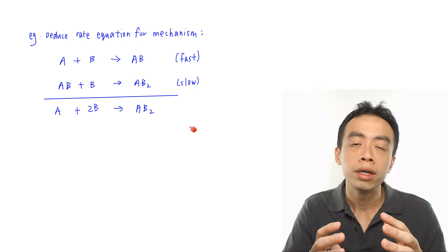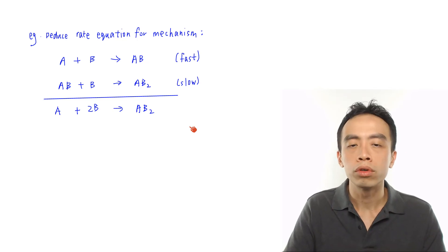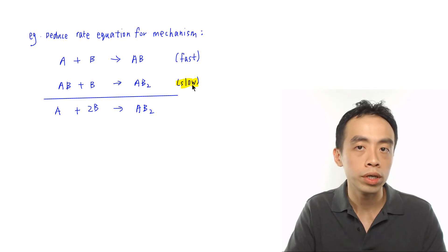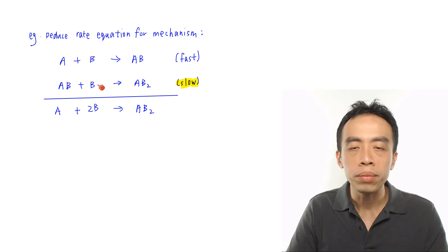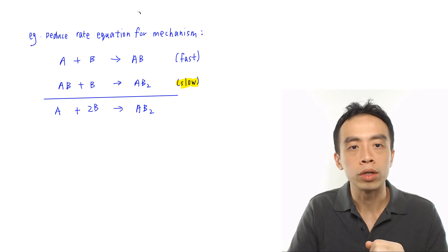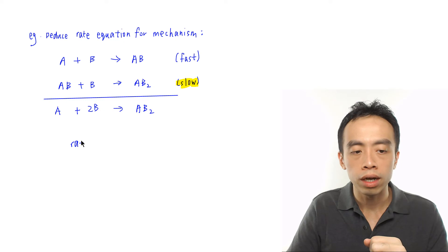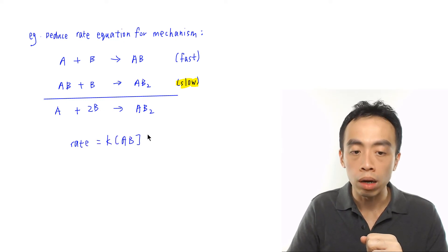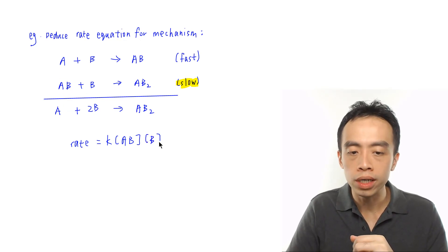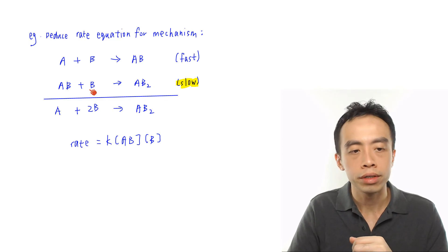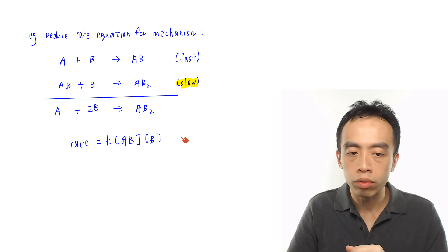When we want to determine the rate equation, we focus only on the slow step. Based on this slow step, I have one AB involved — first order with respect to AB — and one B involved — first order with respect to B. So I can first write out the rate equation as: rate equals k times concentration of AB to the power 1 times concentration of B to the power 1, because there is only one AB and one B in the slow step.